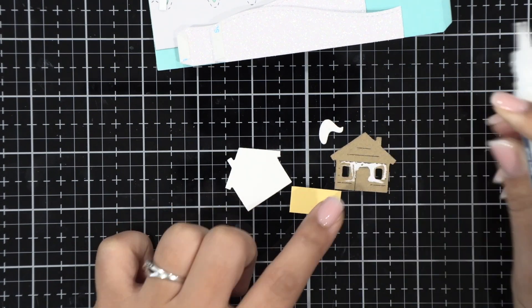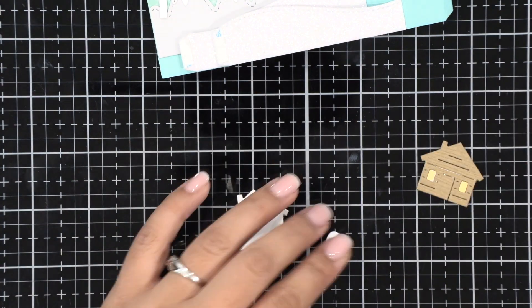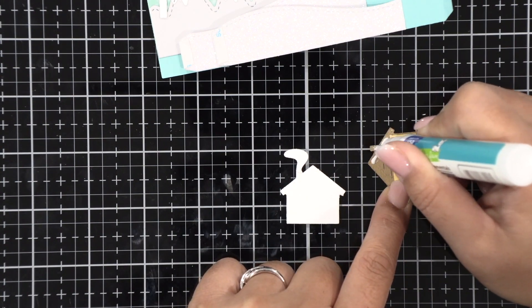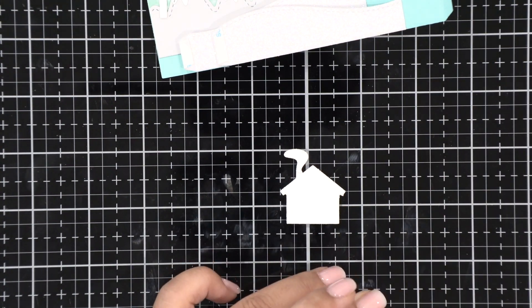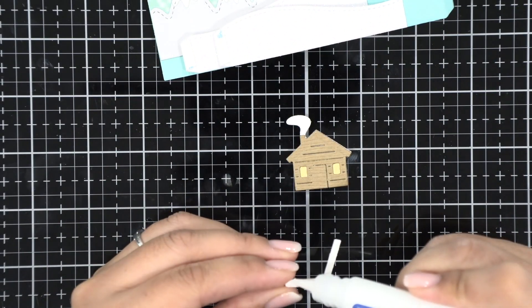I've cut out a little strip of yellow just so I could adhere it behind the windows for some lighting and then I'm going to add the little puff of smoke there out of the chimneys and then I'm going to sandwich that between the two layers just to make sure that it's nice and secure in there.